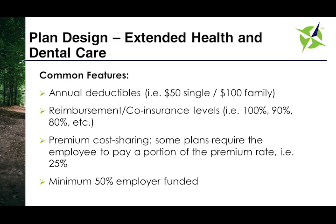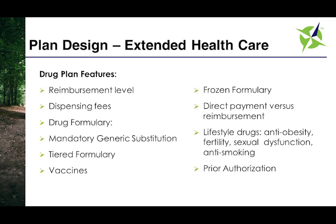Drugs typically represent 75% of all healthcare claims within the plan and include a number of features. They may include reimbursement levels that limit the reimbursement to a specified percentage, resulting in an out-of-pocket expense to the claimant. There may be dispense fee, markup, or ingredient cost limits — those three things drive the cost of prescription drugs. Formulary management aims to limit access to newer or more expensive drugs. Mandatory substitution forces members to take a lower cost alternative to a drug, which often means generic. Some plans provide for a tiered formulary, which reimburses different classes of drugs at different levels to more equitably manage the costs across the plan membership.